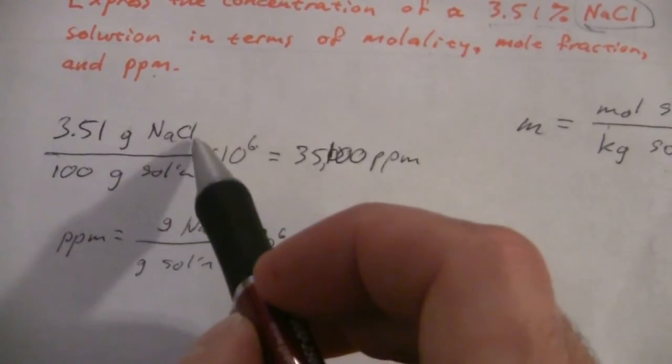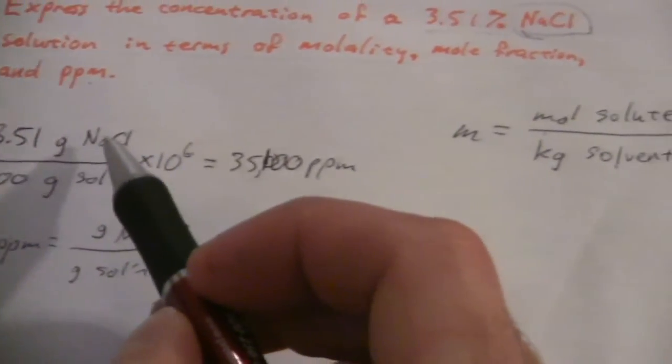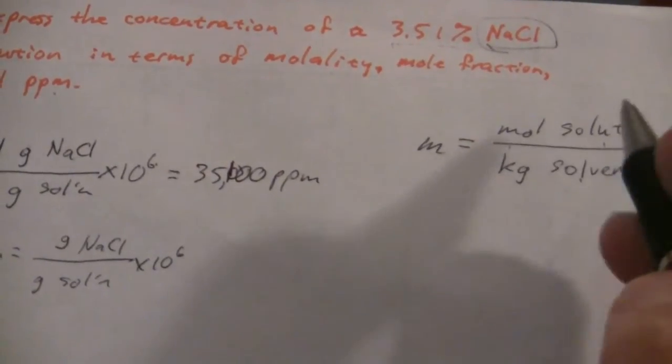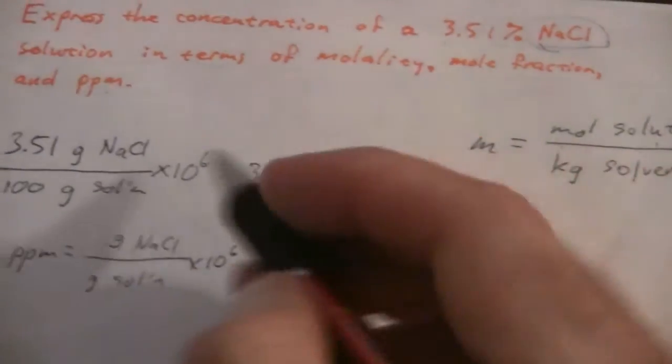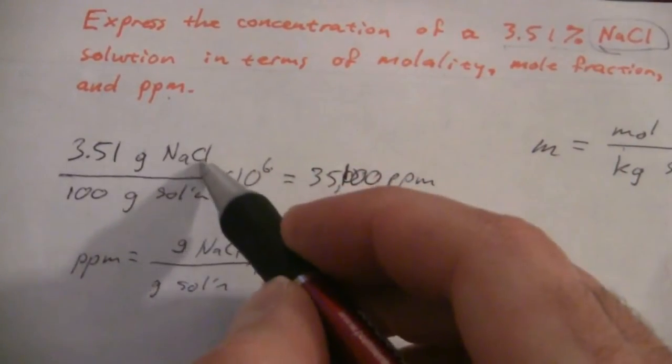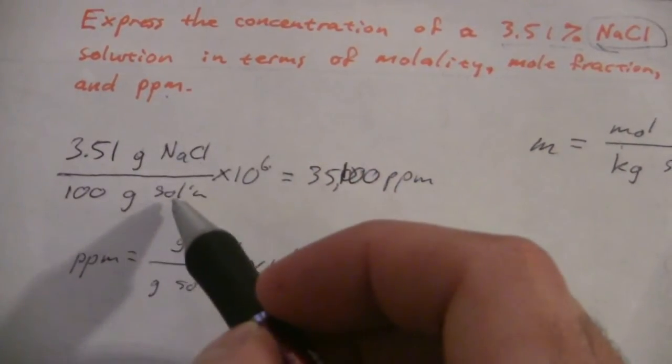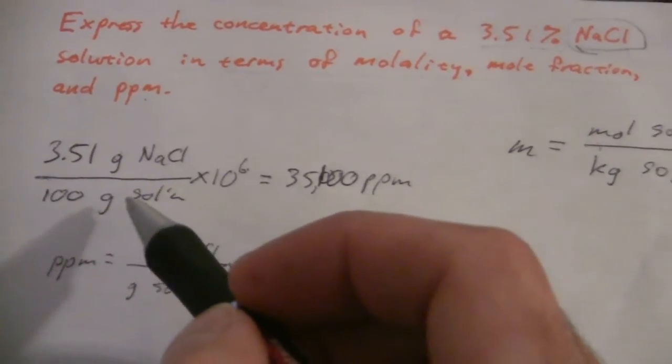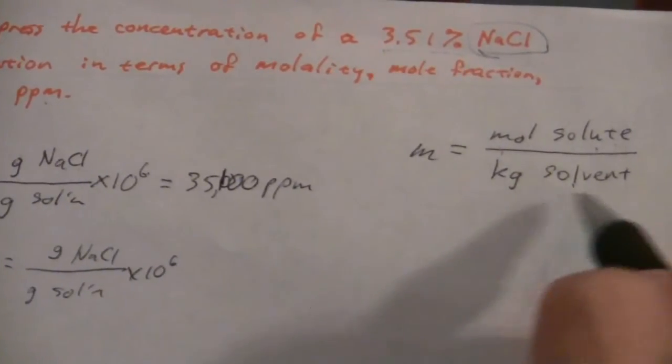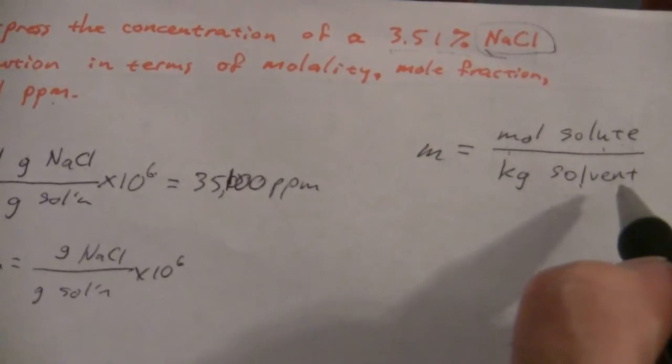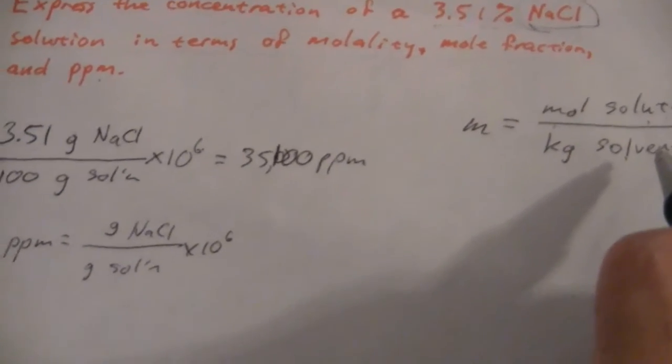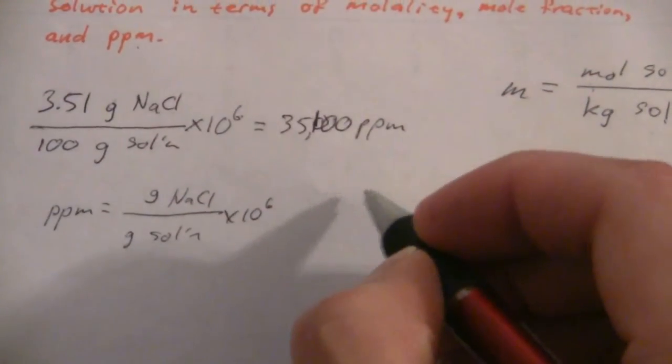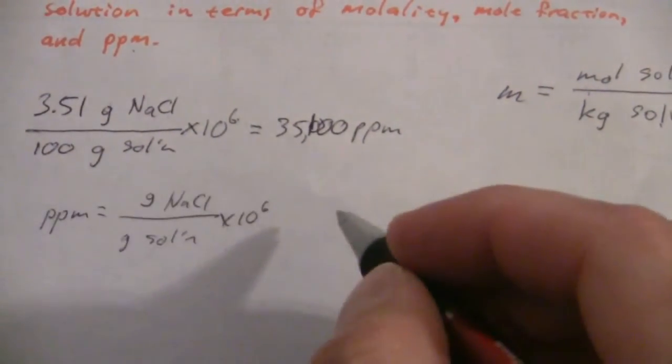You see, we have grams of NaCl, so it won't be hard to get that into moles of NaCl. We just divide by its molar mass, and then we have grams of solution. We need to get that into kilograms of the solvent. So first of all, let's look at that solution part.